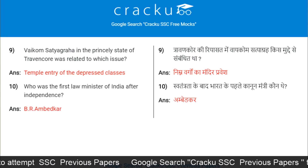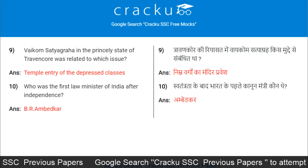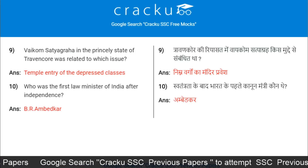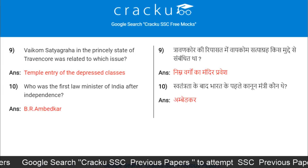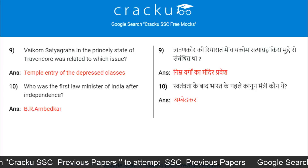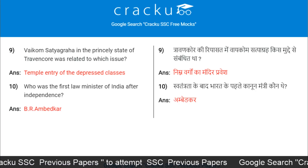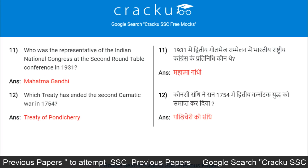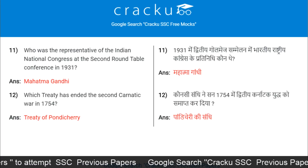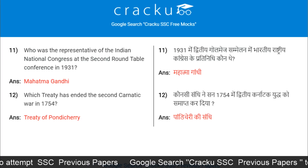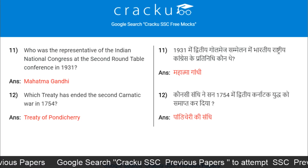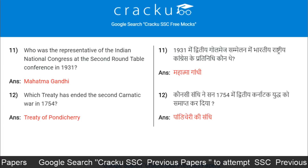Vaikum Satyagraha in the princely state of Travancore was related to which issue? Temple entry of the depressed classes. Who was the first law minister of India after independence? B.R. Ambedkar. Who was the representative of the Indian National Congress at the Second Roundtable Conference in 1931? Mahatma Gandhi.